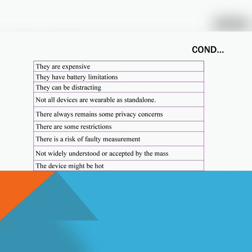In summary, wearables are expensive and have battery limitations — mostly using lithium-ion batteries which are very expensive — and they can be distracting. Not all devices are wearable as standalone. There are always privacy concerns, and there are some restrictions on use in public places or in exam halls where smart watches must be removed. There is also a risk of faulty measurements.